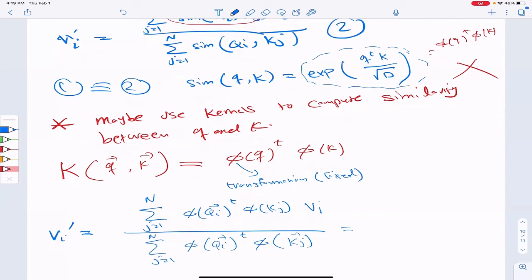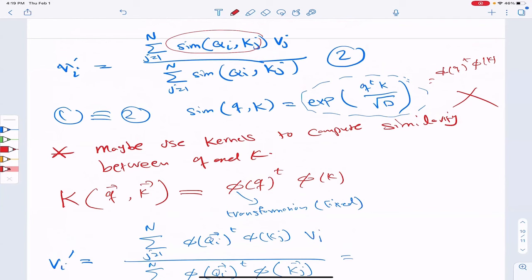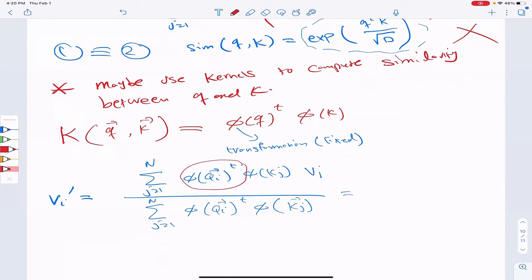But as you can see, now I decomposed, I broke this similarity to a product. Then this guy has nothing to do with my index J. So I can bring it outside of the summation.